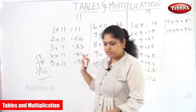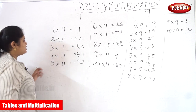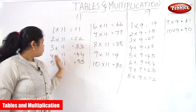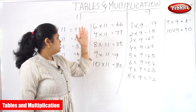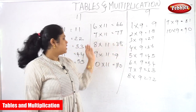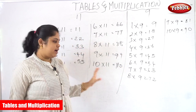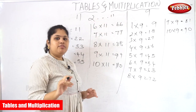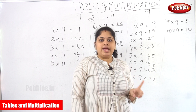The 11th table is the very simplest table like the 10th table. 1 into 11 is 11, 2 into 11 is 22, 3 into 11 is 33, 4 into 11 is 44, 5 into 11 is 55, 6 into 11 is 66, 7 into 11 is 77, 8 into 11 is 88, 9 into 11 is 99, 10 into 11 is 110. We have now read from the 2nd to the 11th tables. We are all very clear from the 2 to 11 tables.